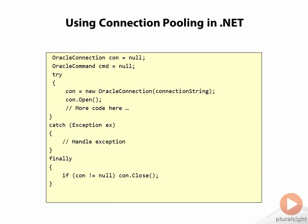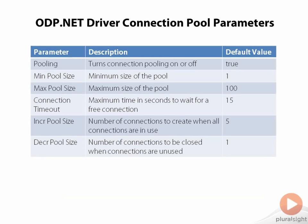So if you're a .NET developer, that's all there is to it. You probably already have code that looks like this in your application, and so you're already using connection pooling without even thinking about it. If you want to control some of the parameters of the connection pool, you can do so through the connection string that you use. The parameters listed here are taken directly from the Oracle .NET developer's guide — these are just the ones that relate to connection pooling.